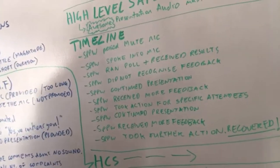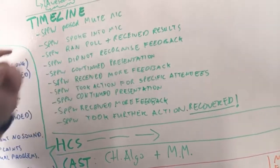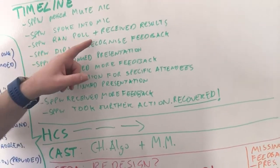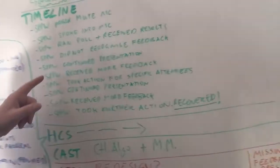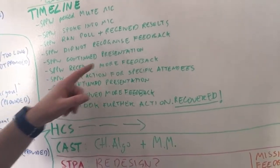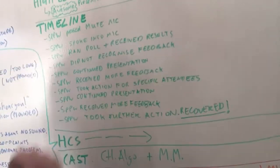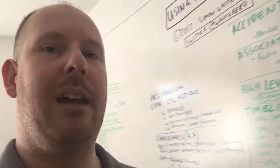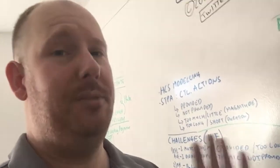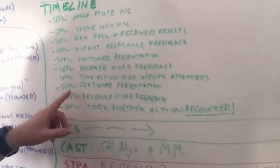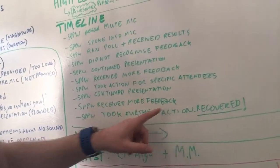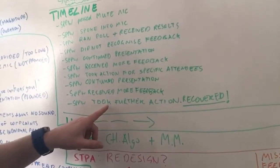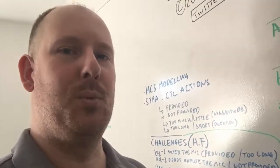So the timeline. Let's just do a quick timeline. I pressed mute on the mic. I spoke into the mic. I ran a poll and received results. I did not recognize the feedback. I continued the presentation. I received more feedback. Some people basically typed, hey, there's a problem. We can't hear you. I took action for those specific attendees. As I said, I thought that perhaps they had issues with their equipment. It wasn't to do with me because obviously, I've done a few of these webinars now, and I know what I'm doing. I'm not an idiot. So then I continued the presentation. I received some more feedback, and then it's at this point I thought, no, there's something not right here. So I took further action, and then I recovered the situation by discovering that I'd left it on mute. Awesome.